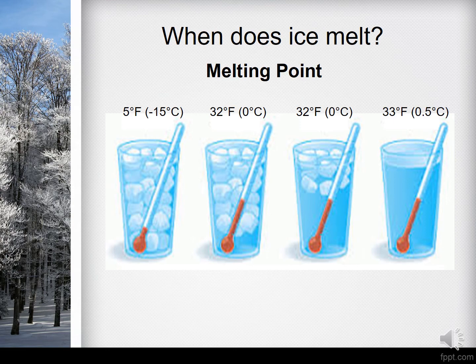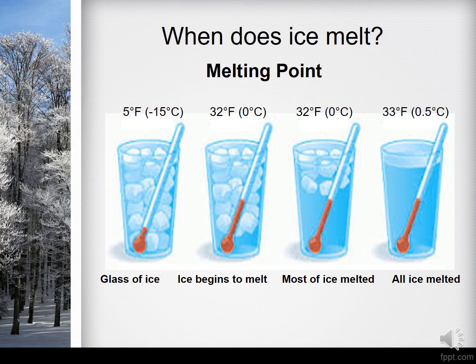The third glass has the same temperature as the second one because of the ice cubes. In the last glass, all the ice has completely melted and has a temperature of 33 degrees Fahrenheit, or 0.5 degrees Celsius. You would notice that the number changed due to the absence of ice — it means that this last glass is no longer as cold as it was before.